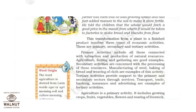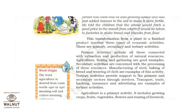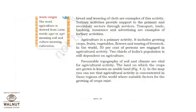Primary activities include all those connected with extraction and production of natural resources — extraction means pulling out or removing things. Agriculture, fishing, and gathering are good examples. Secondary activities are related to the processing of these resources — manufacturing of steel, baking of bread, weaving of clothes are examples. Tertiary activities provide support to the primary and secondary sectors through services — transport, trade, banking, insurance, and advertising.